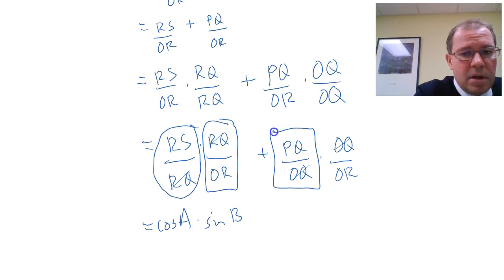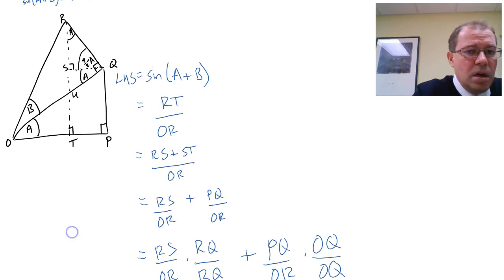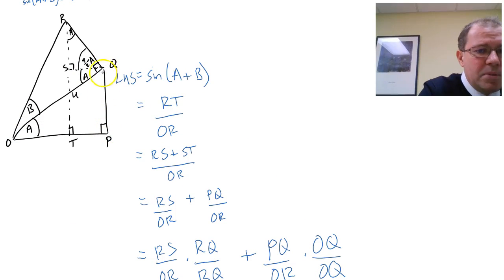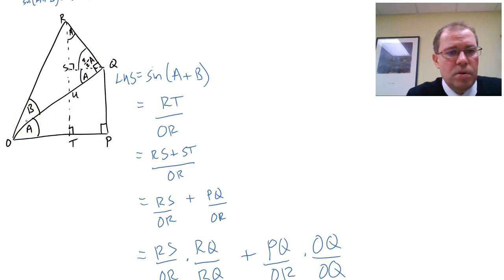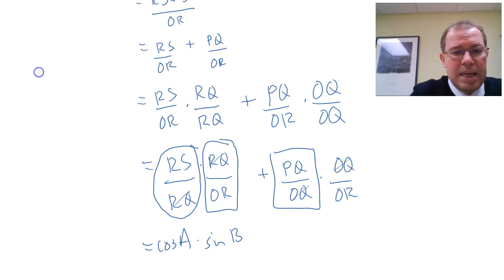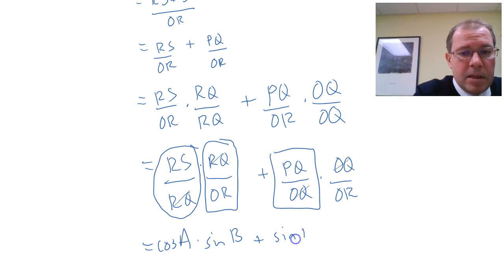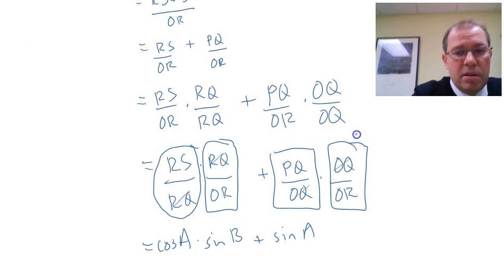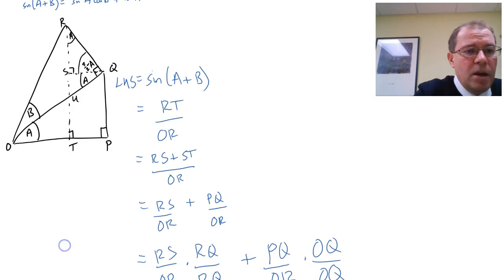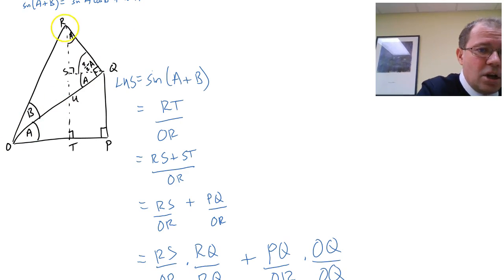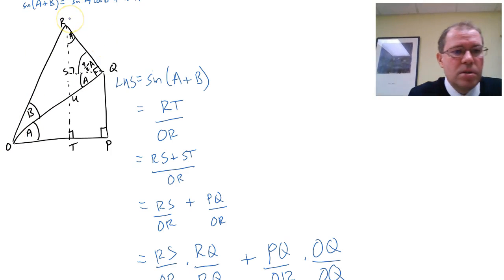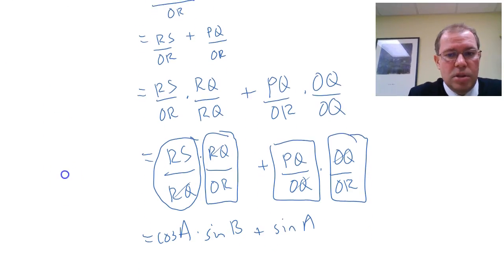Now, let's have a look at PQ over OQ. So PQ over OQ is in the bottom triangle there, and PQ is opposite over OQ is hypotenuse, so that's sine(A). And finally, let's have a look at the ratio OQ over OR. OQ over OR is in the top big triangle there with angle B. It's adjacent over hypotenuse, and so that's cosine(B).